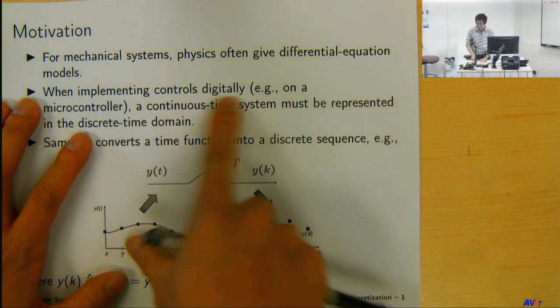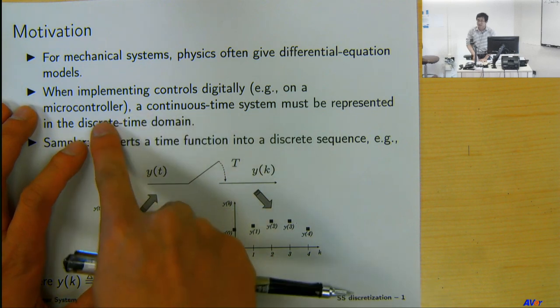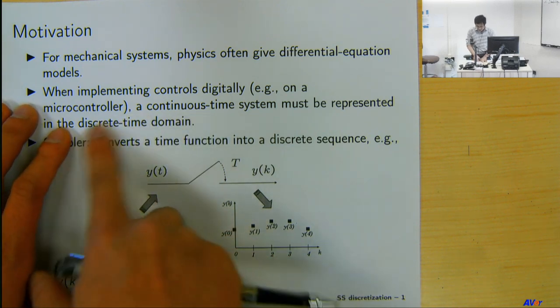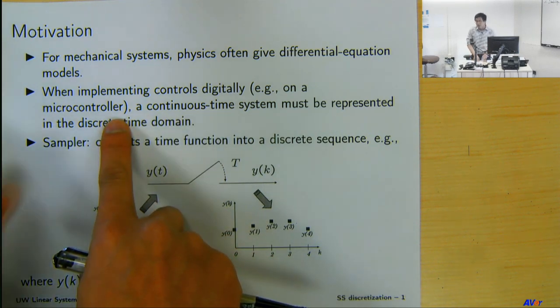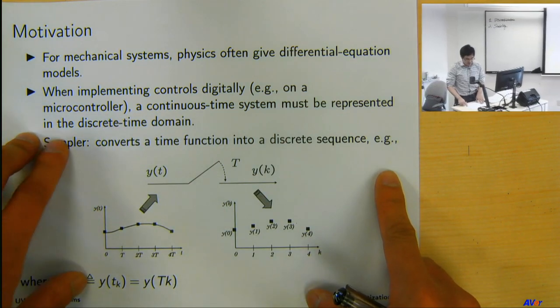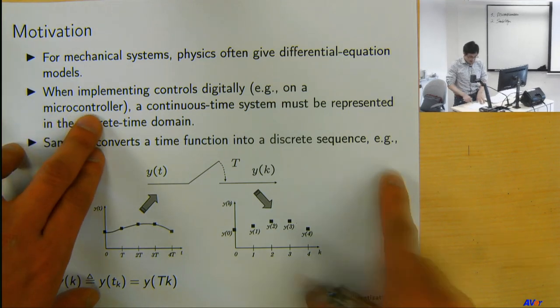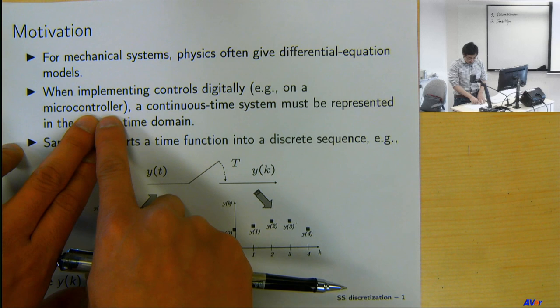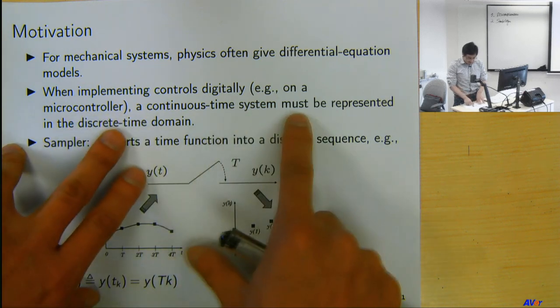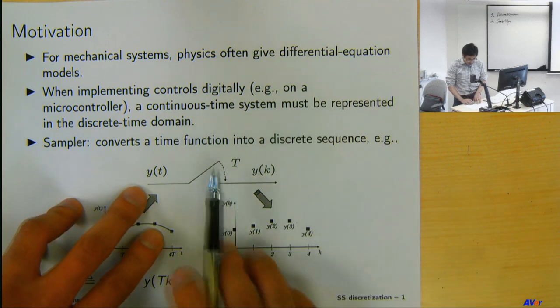When you implement any controller nowadays, it's going through some discretization, either through a microcontroller, a program logic array PLC, or a more powerful national instrument equipment that some of you might have been exposed to. So all these are discretized in the discrete time domain.